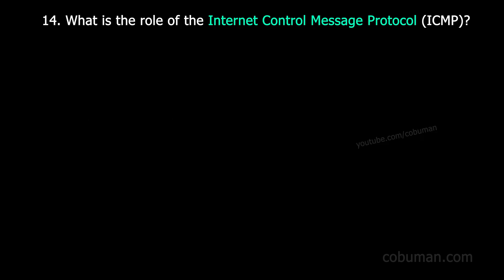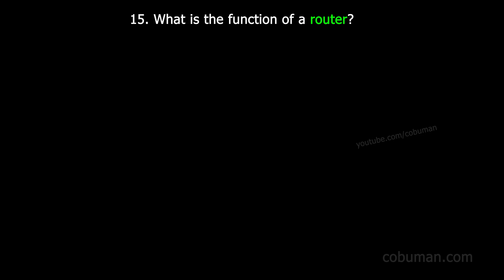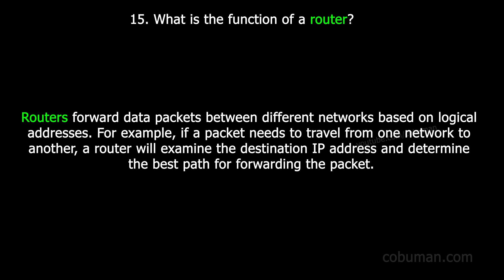Question number fourteen: what is the role of Internet Control Message Protocol? ICMP provides error reporting and troubleshooting functionality in a network. For example, when a ping request is sent from one device to another, ICMP is used to send an echo request and receive an echo reply, indicating connectivity status between the devices.